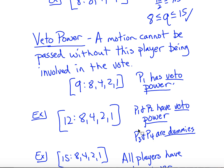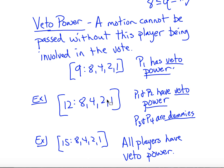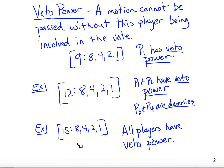Notice we don't have a dictator in this example, but we still have dummies — having a low number of votes doesn't automatically make someone a dummy. In another case, if the quota is 15 and each of the four players must vote for something to make it pass, then all four players have veto power. If any one of them doesn't vote, the motion fails.